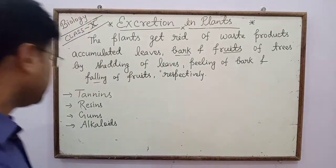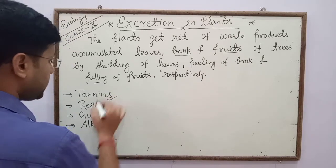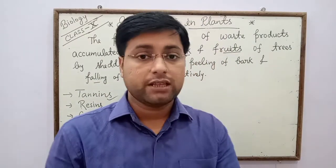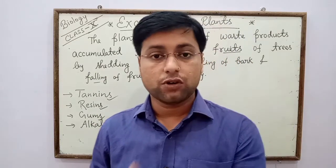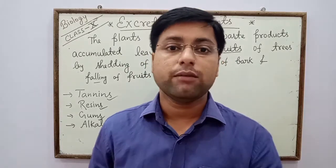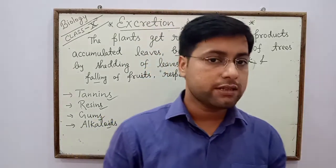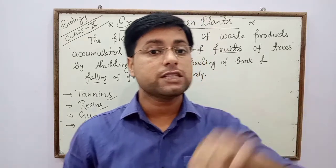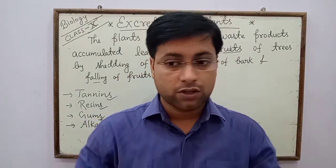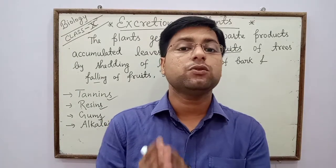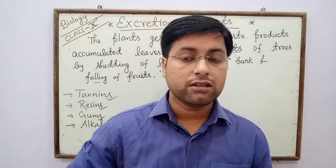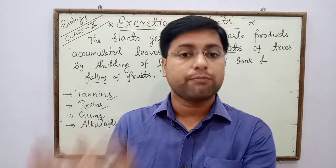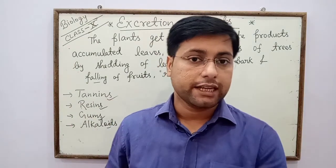Plant bodies also excrete other toxic substances or waste products like tannins, resins, gums, and alkaloids. In plant bodies, many types of waste products are formed during photosynthesis and respiration. Both types of waste products are eliminated through the plant body by the process of excretion, in the absence of a special excretory system. Excretion occurs in plants, animals, and human beings.